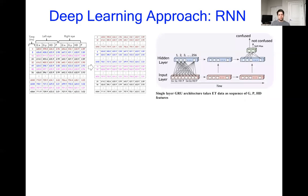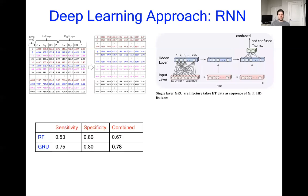Processing this with the RNN, we measure performance by looking at sensitivity, specificity, and then combined. Sensitivity is the confused class accuracy, specificity is the not confused class accuracy, and combined is the average of the two.